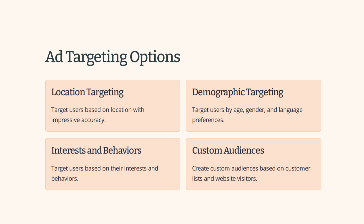Back to ad targeting — there are four basic categories. First is location. For the hoodie campaign, let's say it's launching in New Jersey because we have a new store there and want to build brand awareness. We can target down to city level, up to state or county level, or include neighboring cities, then pinpoint on the map.